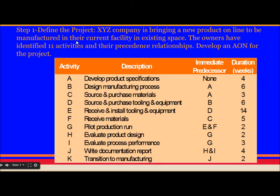As I use this example in my CPM video, I will use the same example here. XYZ company is bringing a new product online to be manufactured in their current facility in existing space. The owners have identified 11 activities and their precedence relationship. Develop an activity on node for the project.